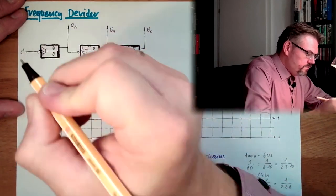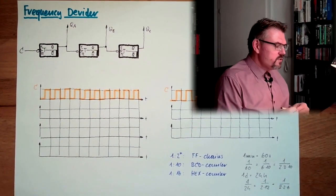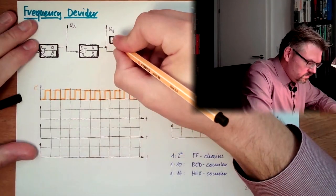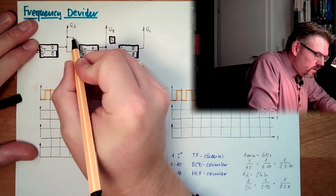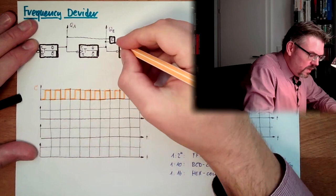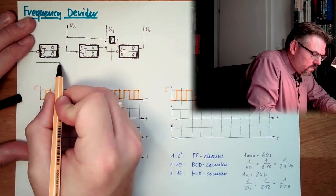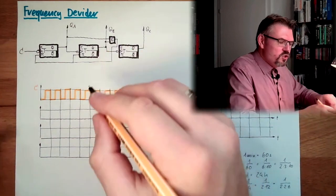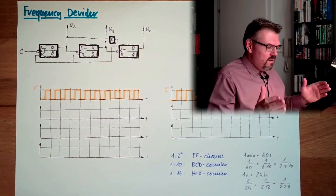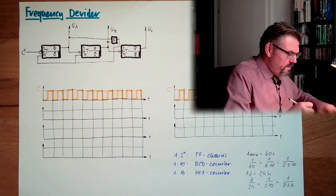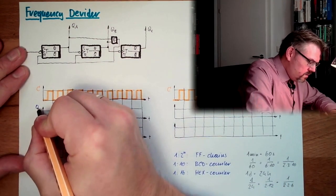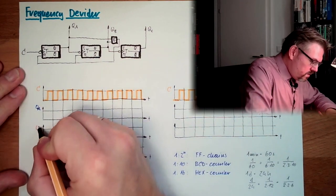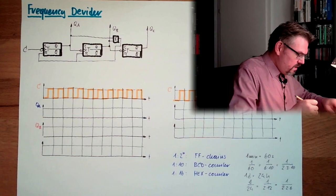And actually, what I'm going to do is I add an AND here. Logic AND. When every time QA and QB are one, I'm going to reset those two. So this is the addition. And now let's see what is happening.